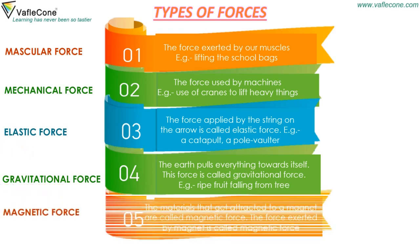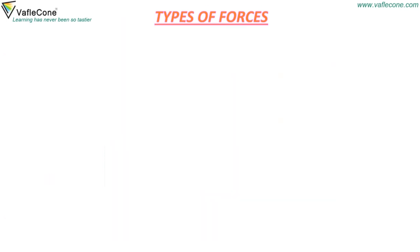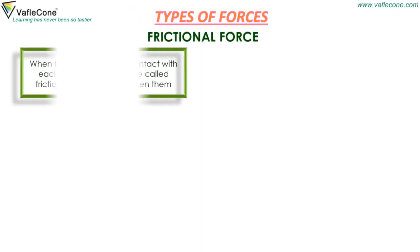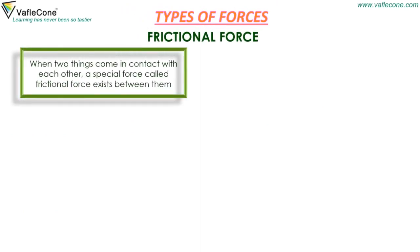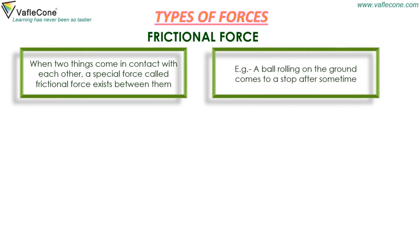Magnetic force: the force exerted by a magnet is called magnetic force. Frictional force: when two things come in contact with each other, a special force called frictional force exists between them. For example, a ball rolling on the ground comes to a stop after some time.